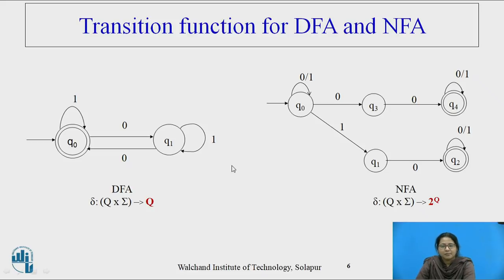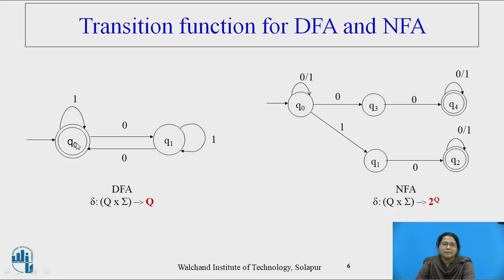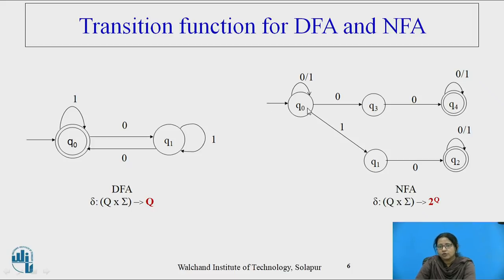Just look at these two diagrams — the picture will be clear. In DFA, there are two states Q0 and Q1, and for any symbol there is exactly one path. So from Q0, by processing 0, the machine either remains in the same state or moves to the next state. From Q0 by processing 1, the machine remains in the same state. In NFA, from Q0 by processing 0, the machine remains in the same state but at the same time also moves from Q0 to Q3. That is the main difference between DFA and NFA.